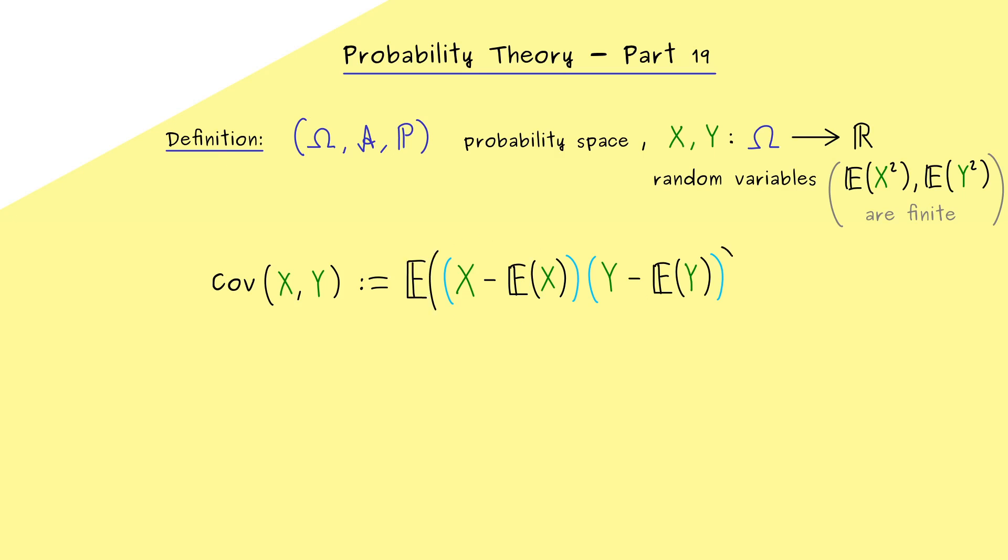And then, finally, we simply take the expectation of this whole thing. So what comes out for the covariance is again a real number. However, here please note, in general, this could be definitely also a negative number. And this is in contrast to the normal variance.